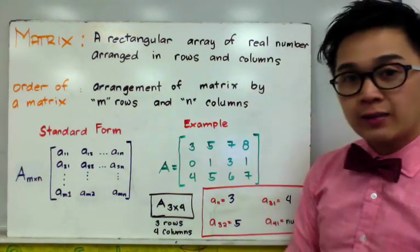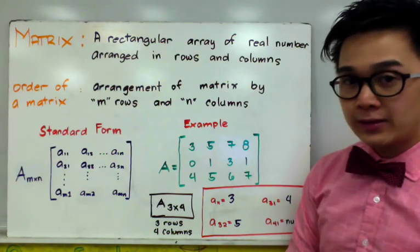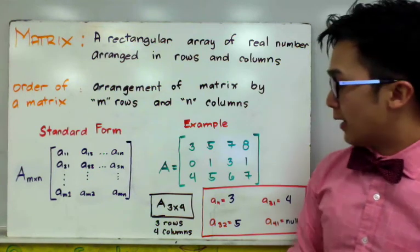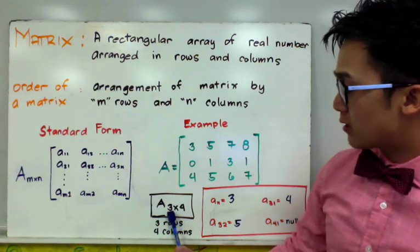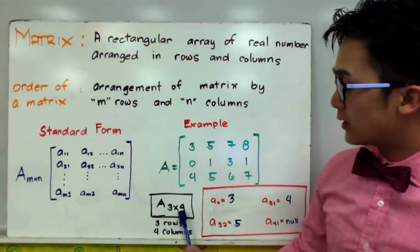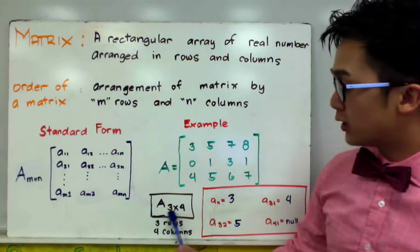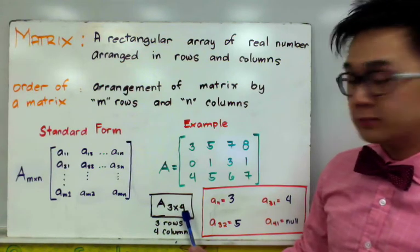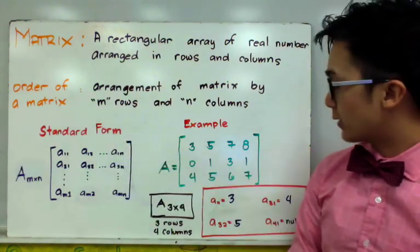A 3 by 4 matrix is not the same as a 4 by 3 matrix. The first number — 3 — is the number of rows, and 4 is the number of columns. The row always comes first before the number of columns. That is how we express the order of a given matrix.